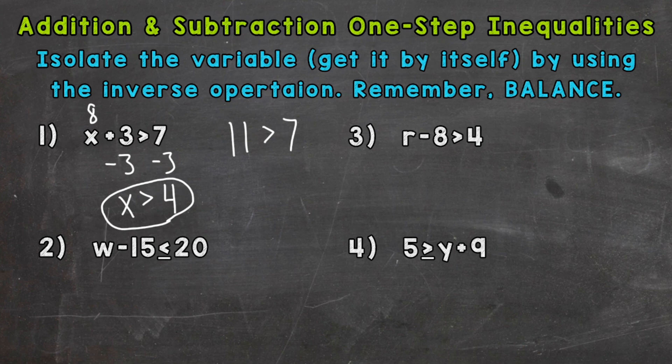So let's move on to number 2, where we have w minus 15 is less than or equal to 20. So we're subtracting 15. We need to do the inverse or opposite operation. So it would be adding 15. Let's add 15 to both sides. The 15's on the left are going to cancel out and isolate our w. Bring down our sign. And then 20 plus 15 is 35. So w has to be less than or equal to 35.